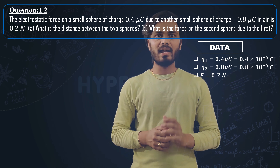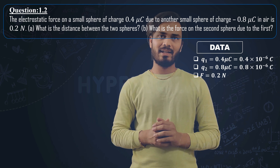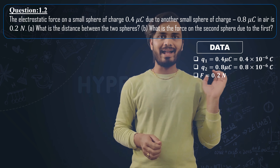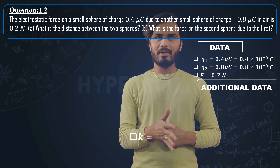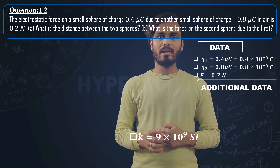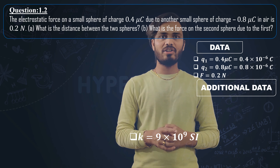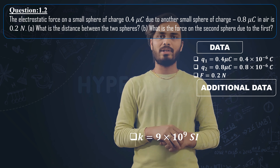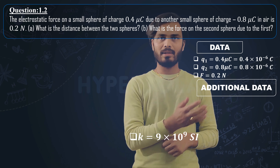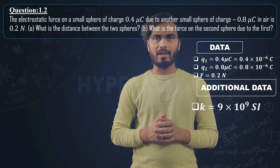Additional data: k equals 9 cross 10 raise to 9 in SI units. This is the additional data we need for the solution.